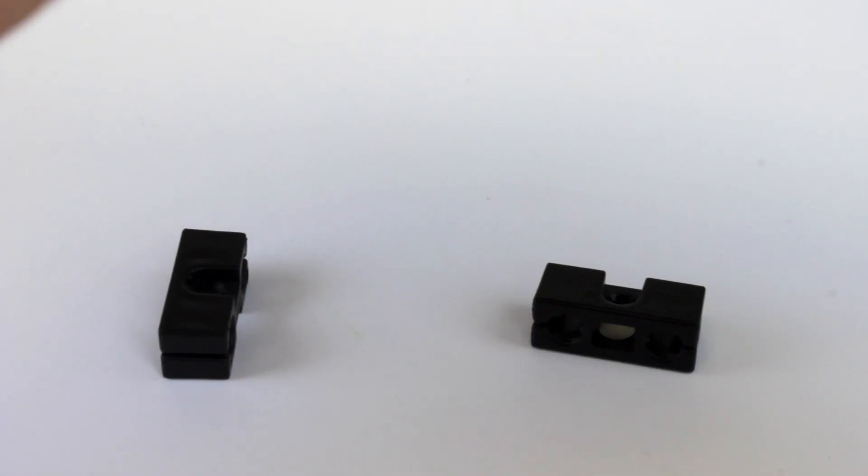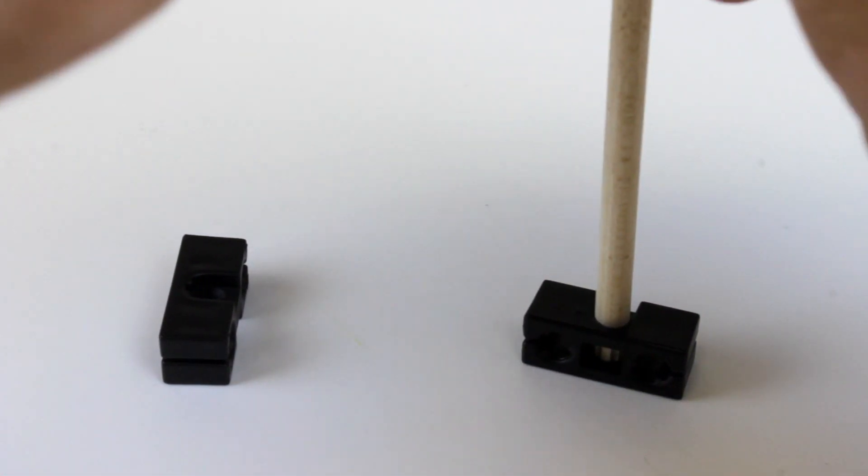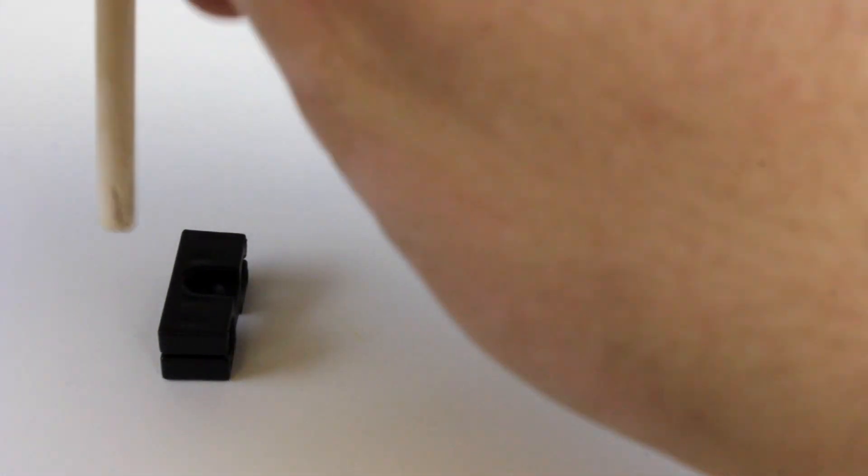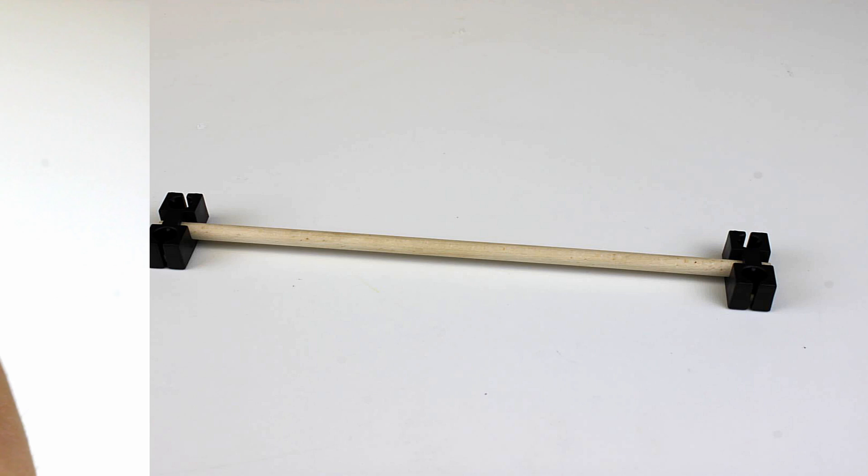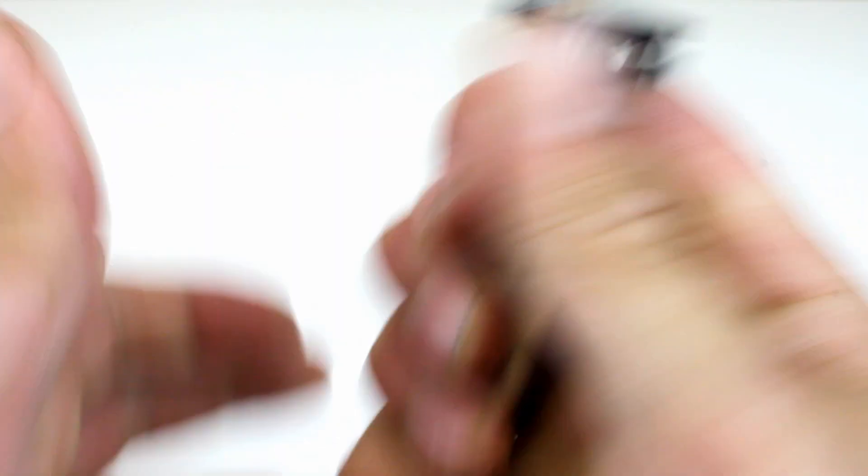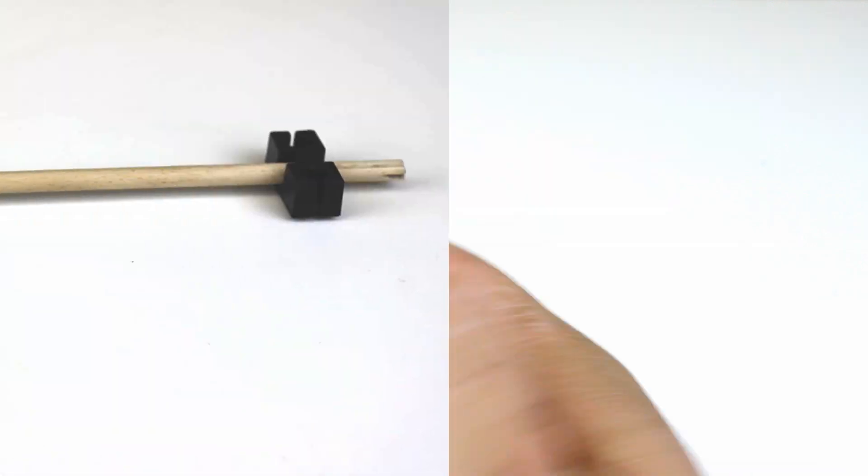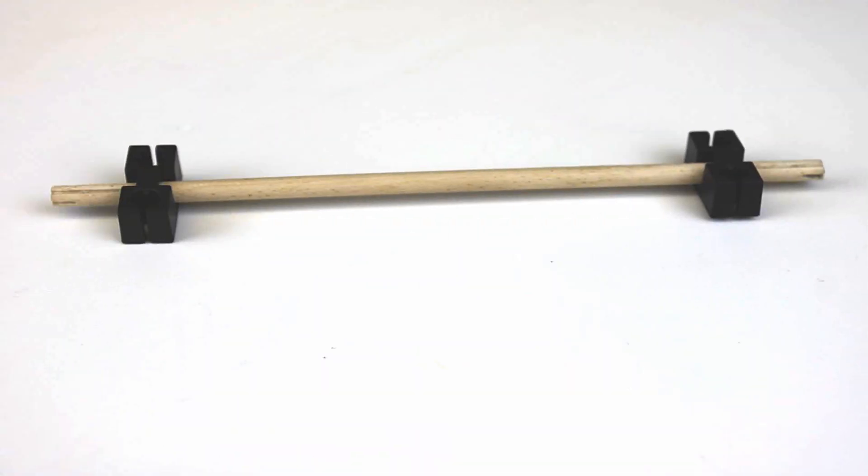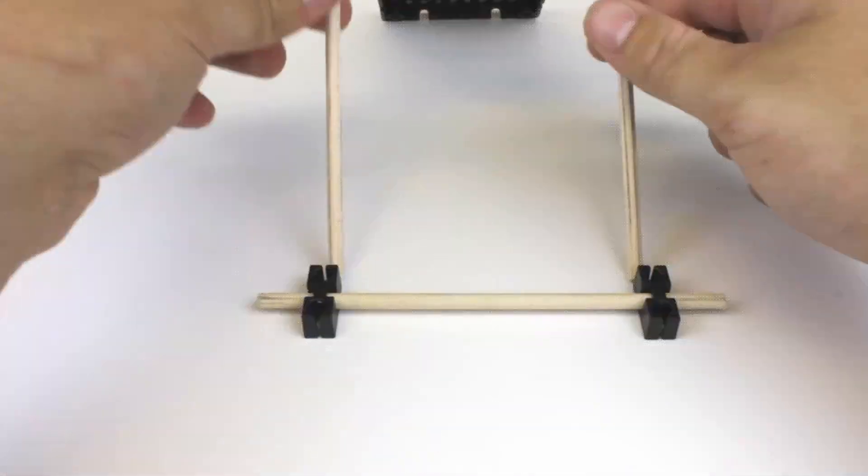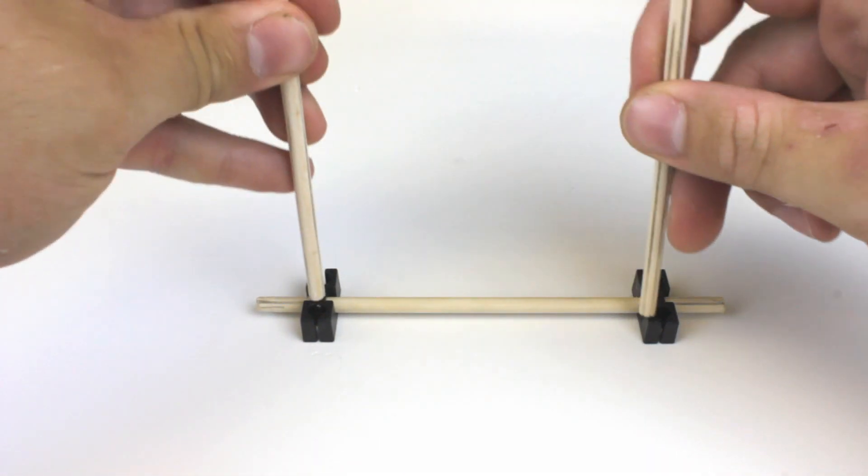Take your remaining dowel and trim it down to 5 inches, and then place each end of the dowel into a perpendicular block. Make sure your perpendicular blocks have the same orientation. Then slide the perpendicular blocks down 10 millimeters, which is about 3 eighths of an inch. Then place the dowels into the end of the perpendicular block.